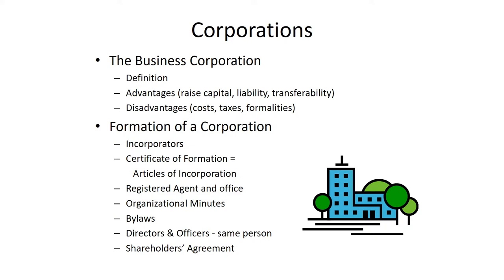One thing a lot of small businesses do is forget to update their registered agent information. If you move your business or your registered agent moves, you need to file a form with the Secretary of State to update that address. If you change to a different registered agent, you need to update that as well. Registered agents can be individuals — in a typical small business, the owner will be the registered agent. It's possible to hire companies to do that for you, costing several hundred dollars a year, but probably not worth it unless you're really trying to hide from process servers.